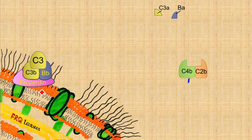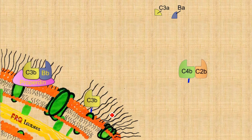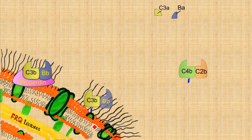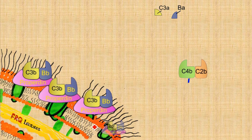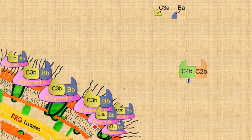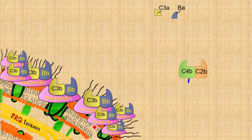C3 acts as a substrate for this C3 convertase complex. It is broken down into two portions: the smaller portion C3a drifts away, while the larger C3b attaches again to the bacterial surface. This cycle repeats many times, accumulating large amounts of C3b on the bacterial surface — a signal for macrophages to come, engulf the pathogen by phagocytosis, a process known as opsonization.